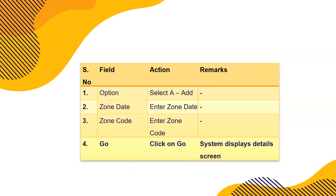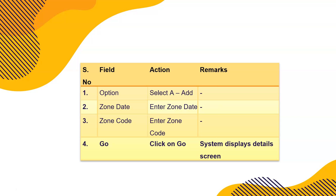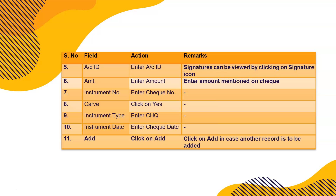Click on Go — this screen appears. You have to add each and every instrument, keep on adding until all instruments are added. Do not submit yet. The zone date will be today's date and the zone code will automatically populate. Click on Go — the screen appears. Enter the zone code, click Go, then enter each instrument. Every check belongs to a particular account of our bank customer — enter that account ID and the amount mentioned on the check. Then there is an instrument details tab.